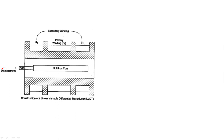See this figure very carefully. This is the core area — a free space where we can insert the soft iron core and take it out. The wire wound here is secondary winding one, and this is secondary winding two. In between these two secondary windings we have the primary winding — only one primary winding, but two secondary windings.